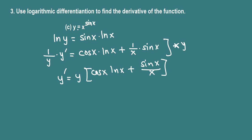We can replace y by the given function to get the final answer. So y prime is x to the sin x, times cos x ln x plus sin x over x. That's the final answer.